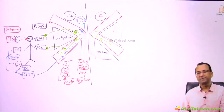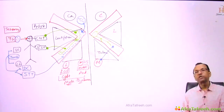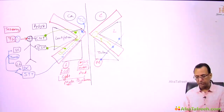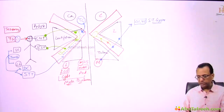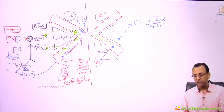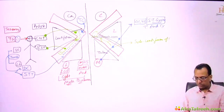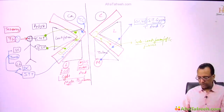The medial geniculate body sends fibers using the posterior part of the internal capsule, passing under the lentiform nucleus, to reach area 41 and 42 — the superior temporal gyrus, or temporal auditory cortex. These are called the sublentiform fibers of the internal capsule, because they pass under the lentiform nucleus, carrying auditory information.